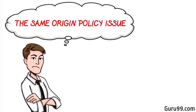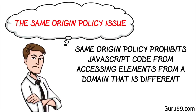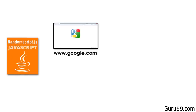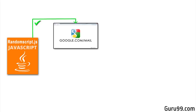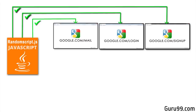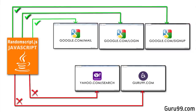The Same Origin Policy issue: Same Origin Policy prohibits JavaScript code from accessing elements from a domain that is different from where it launched. For example, the HTML code in www.google.com uses the JavaScript program RandomScript.js. The Same Origin Policy will only allow RandomScript.js to access pages within google.com, such as google.com/mail, google.com/login, or google.com/signup. However, it cannot access pages from different sites such as yahoo.com/search or guru99.com, because they belong to different domains.